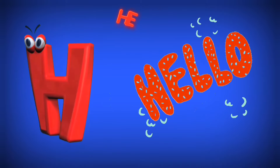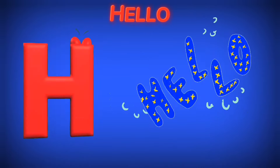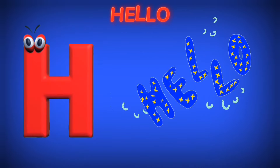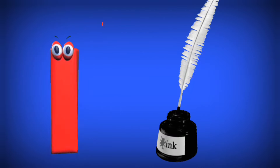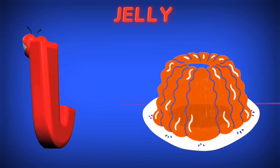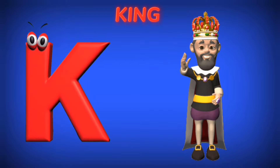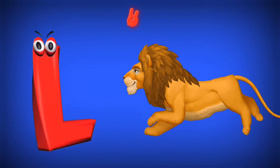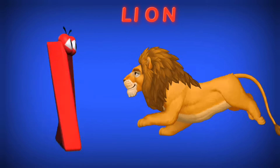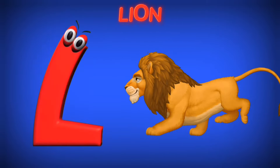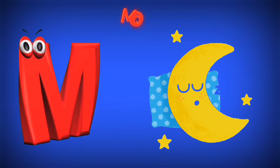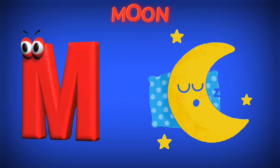H is for Hello. Ha, Ha. Hello. I is for Ink. E, E. Ink. J is for Jelly. J, J. Jelly. K is for King. K, K. King. L is for Lion. L, L. Lion. M is for Moon. M, M. Moon.